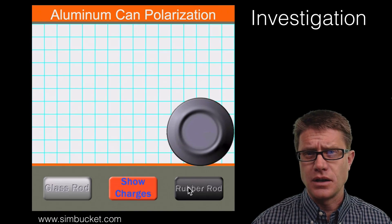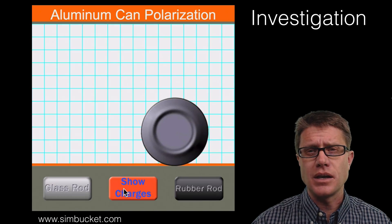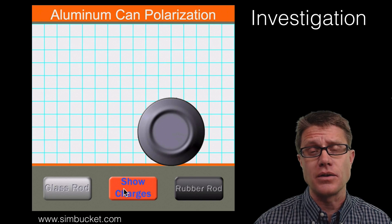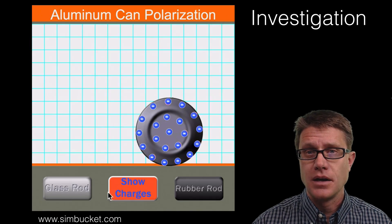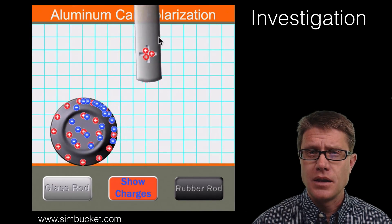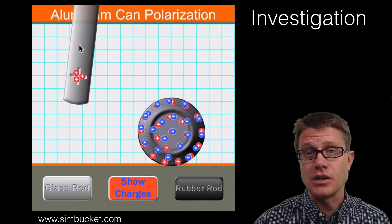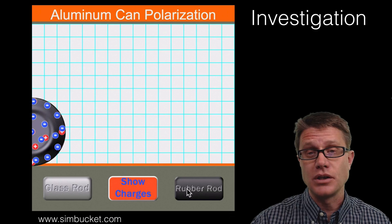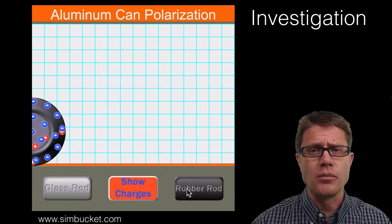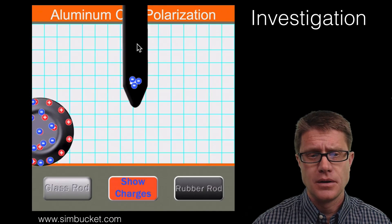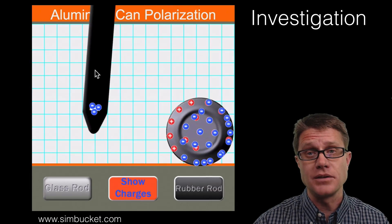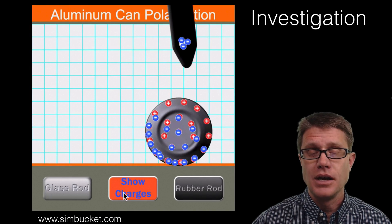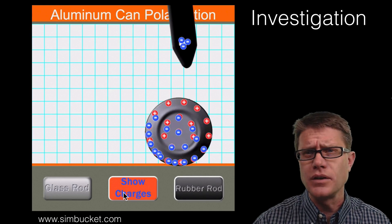You cannot see the charges, so before I click the button and show you the charges, you should be thinking: where are those charges in the two objects, and how are they moving so that we get this attraction? Remember that the can is a conductor, so the electrons can move within it. The glass rod has a positive charge — the electrons are drawn towards it, giving a buildup or induction on one side, so we have a negative charge, and there is an attraction between the glass and the can. Now for the rubber rod, which has a negative charge, it repels the electrons, pushing them away. We are left with the protons — the positive charge — and that is where the attraction is coming from. It does not matter what the charged object is; we still have attraction and conservation of those charges — they are just moving to different places within the objects.